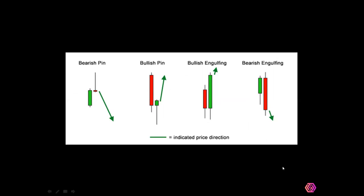There are four main candlestick patterns to look out for. The bearish pin bar — which looks like a pin or hammer — is bearish, meaning it signals selling. When you have a bearish pin, it is time to sell. When you have the bullish pin, it's time to buy. Bullish engulfing: time to buy. Bearish engulfing: time to sell. Take note of these candlestick patterns because they are your entry trigger.